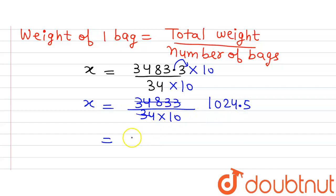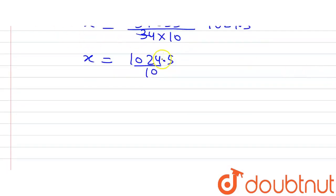This is what we will get and there is already a 10 in the denominator, so this is the weight of one bag x. Now on simplifying it further, because there is 10 in the denominator, this decimal point is going to shift one digit to the left, which will give us 102.45 kilograms.